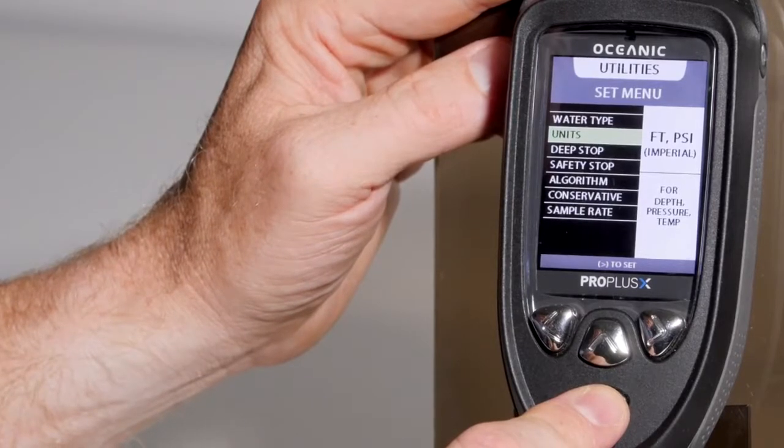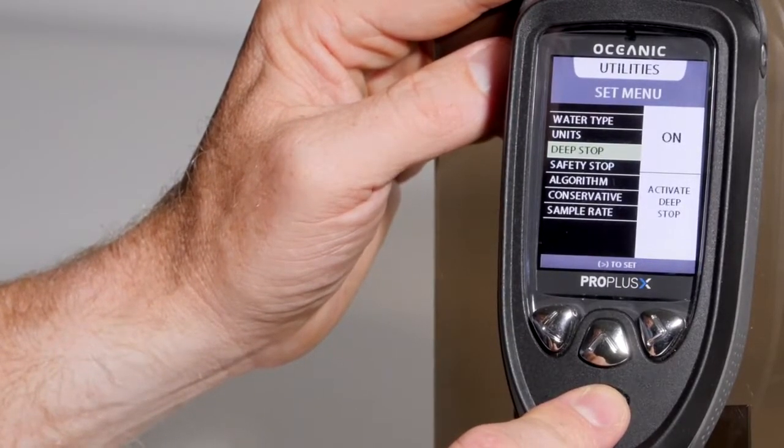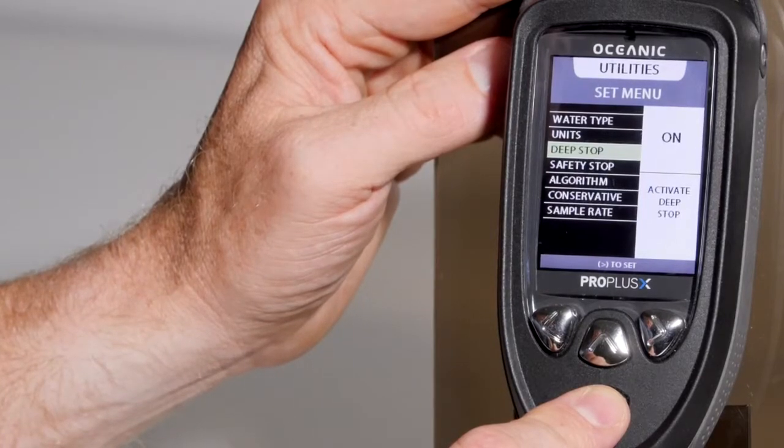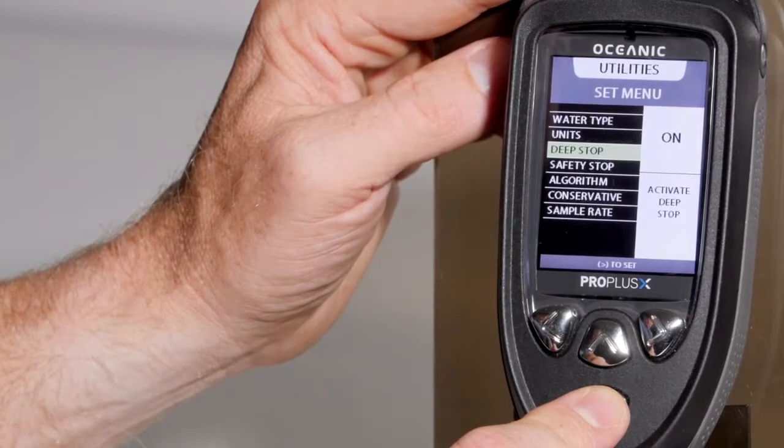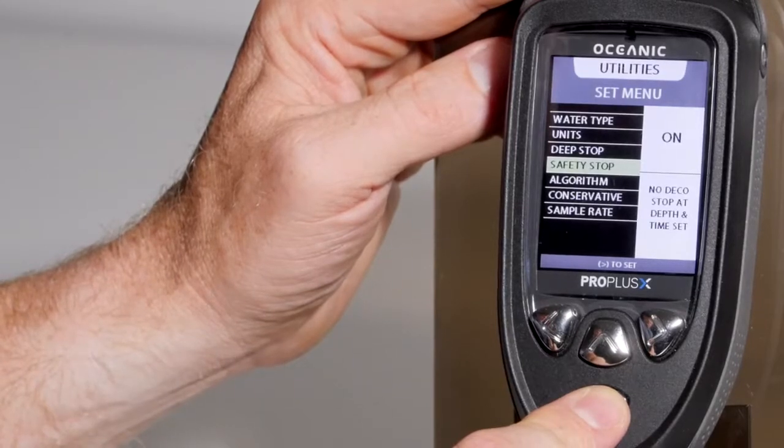You can change units of measure. You can turn on a deep stop. A deep stop will stop you for 3 minutes at 50% of your maximum depth. You must exceed 80 feet to activate this feature. You are not penalized if you do not stop at a deep stop or a safety stop.